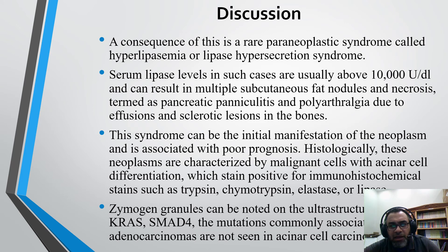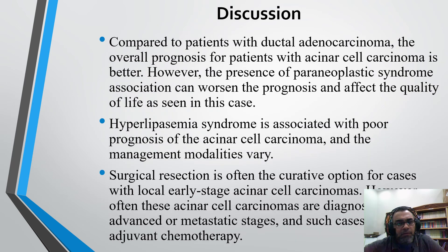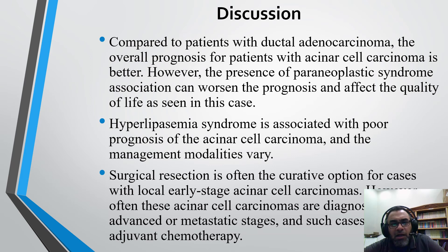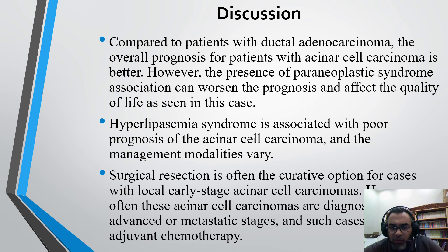KRAS and SMAD4 mutations commonly associated with ductal adenocarcinoma are not seen in acinar cell carcinoma. Compared to patients with ductal adenocarcinoma, the overall prognosis of patients with acinar cell carcinoma is better. However, the paraneoplastic syndrome association can worsen the prognosis due to delayed diagnosis and affect quality of life as seen in this case. Lipasemia syndrome is associated with poor prognosis of acinar cell carcinoma, and management modalities vary. Surgical resection is often the curative option for localized early-stage acinar cell carcinoma, but these tumors are often diagnosed at advanced or metastatic stages, requiring adjuvant chemotherapy with poor prognosis.